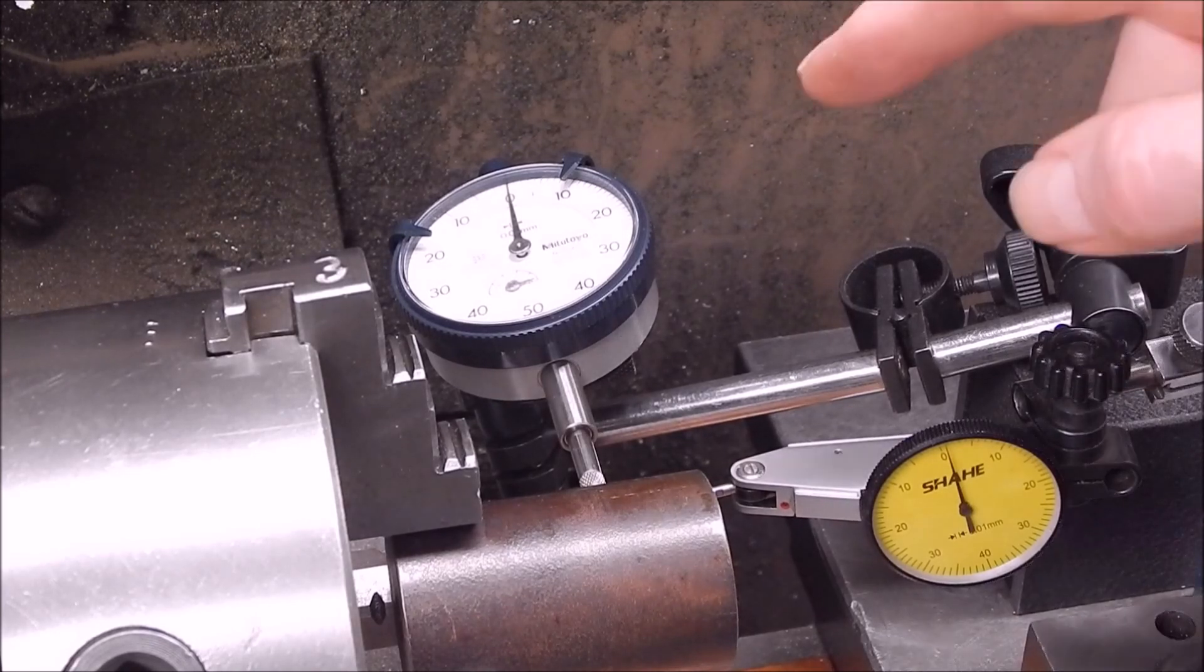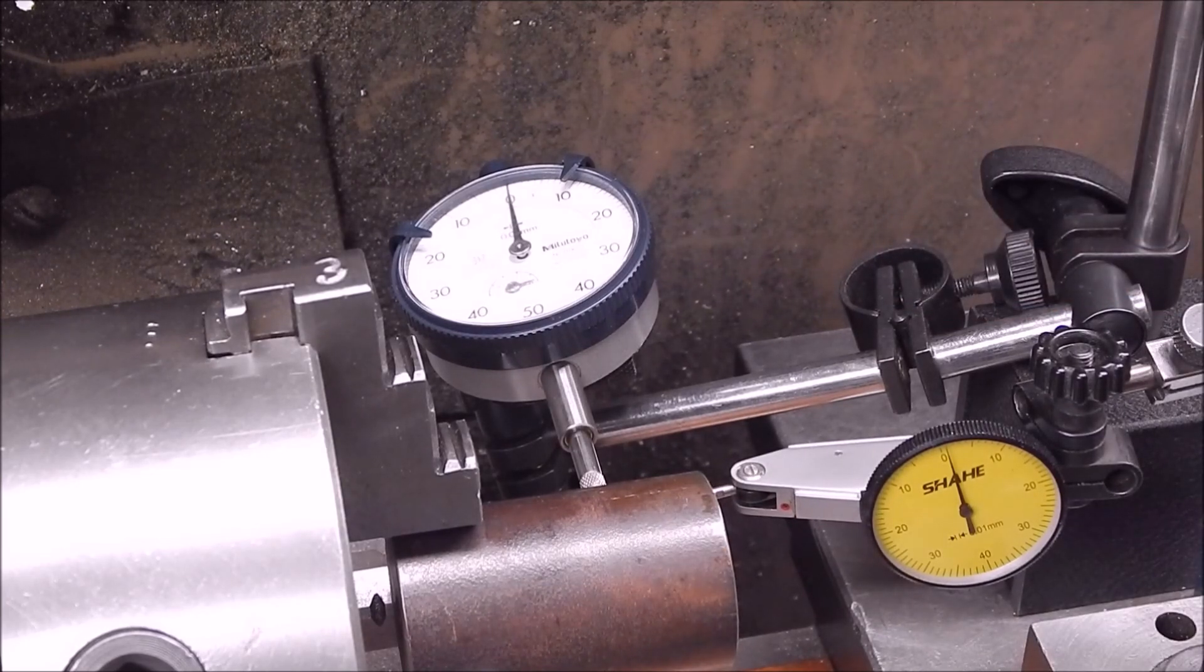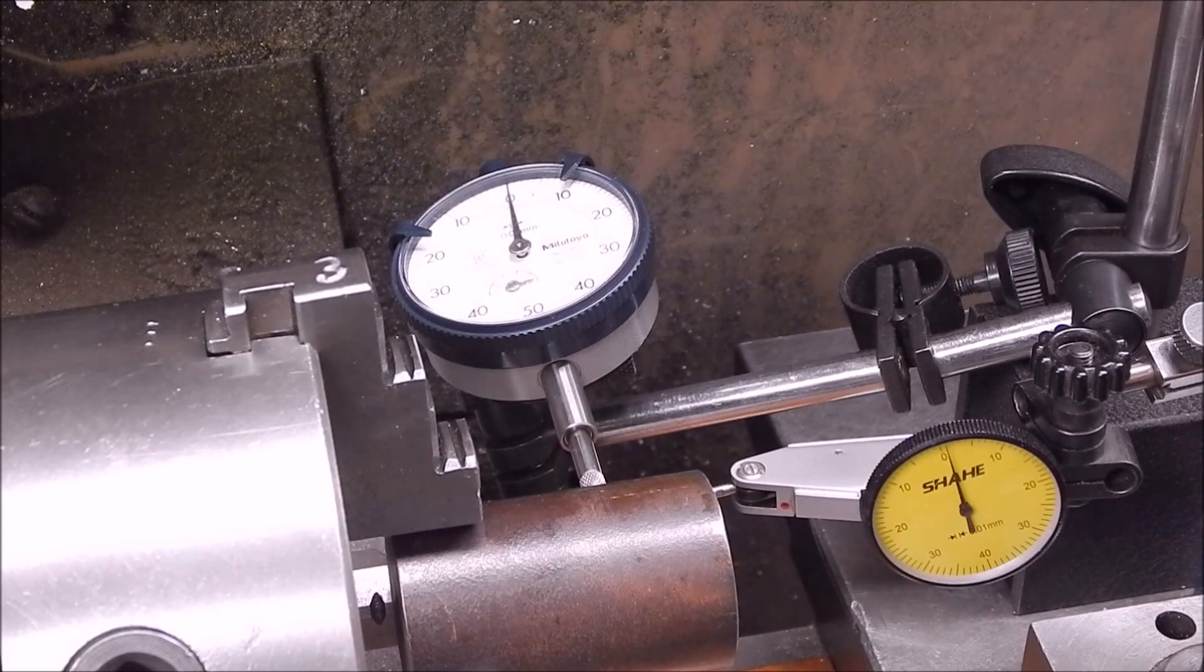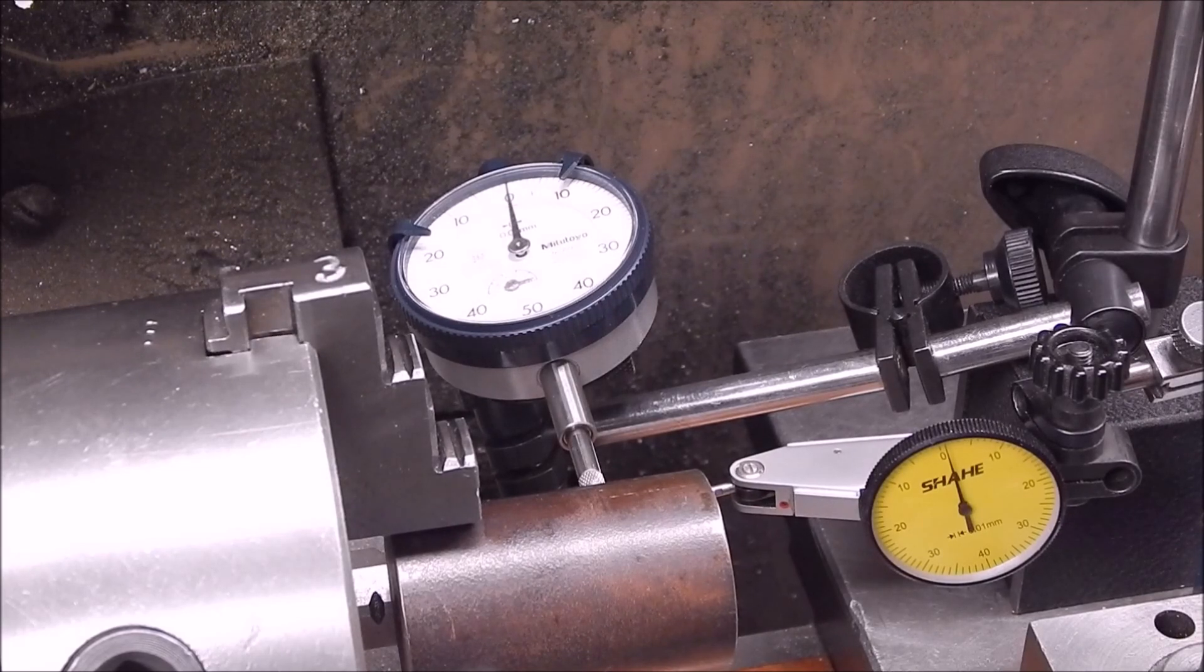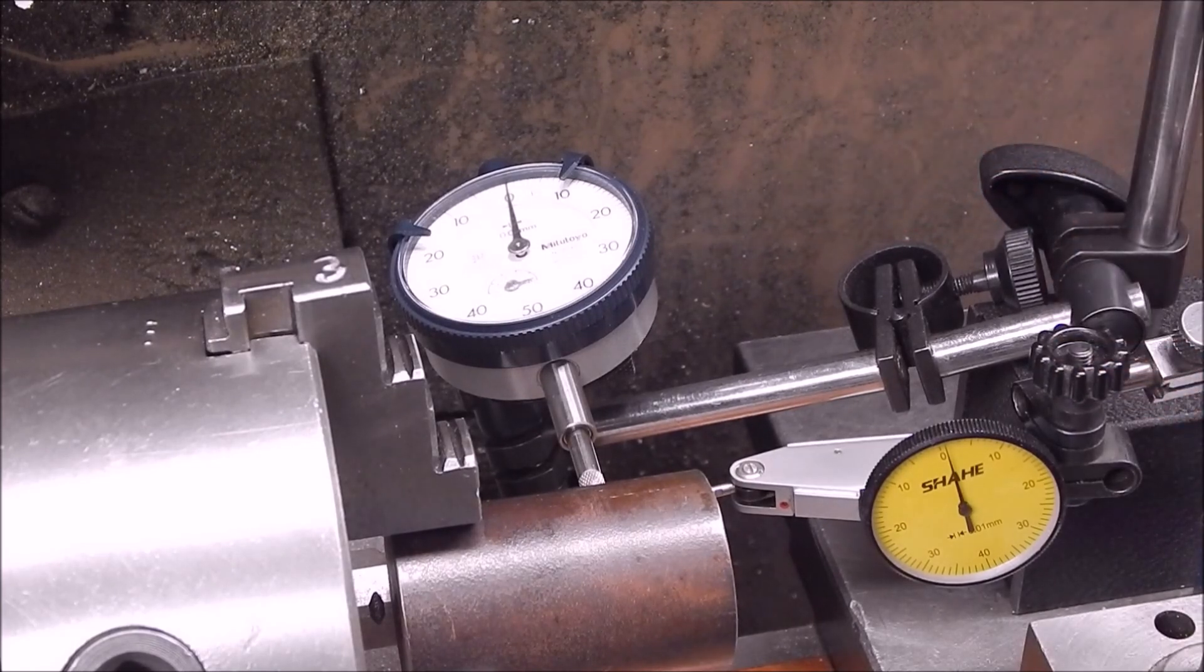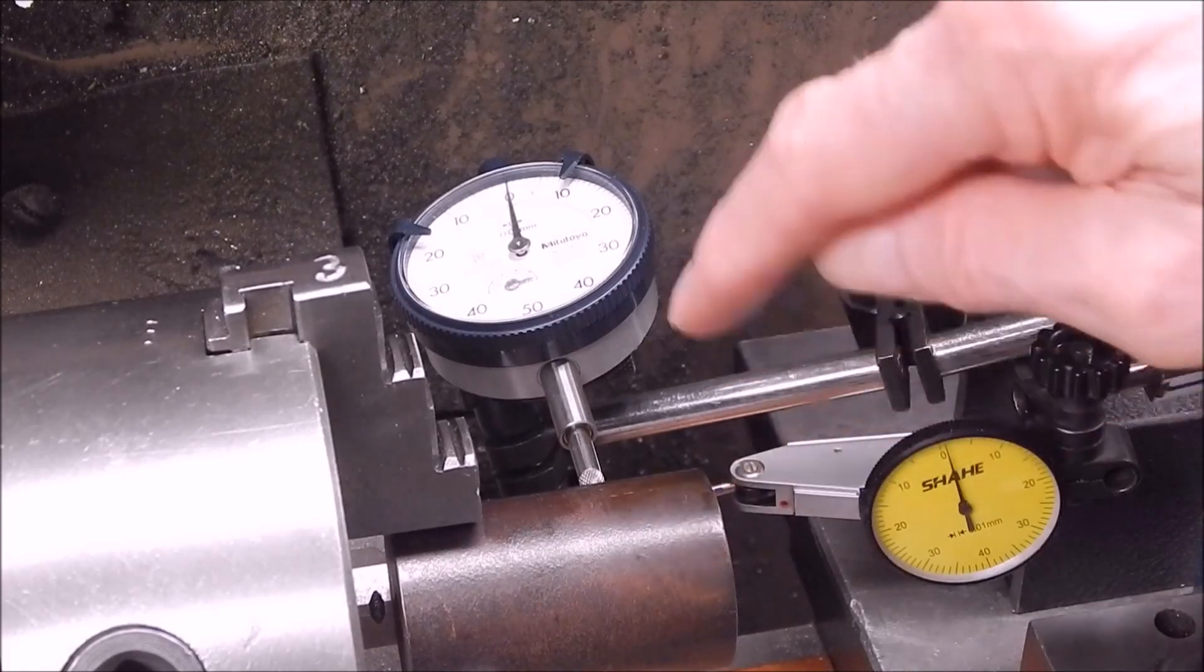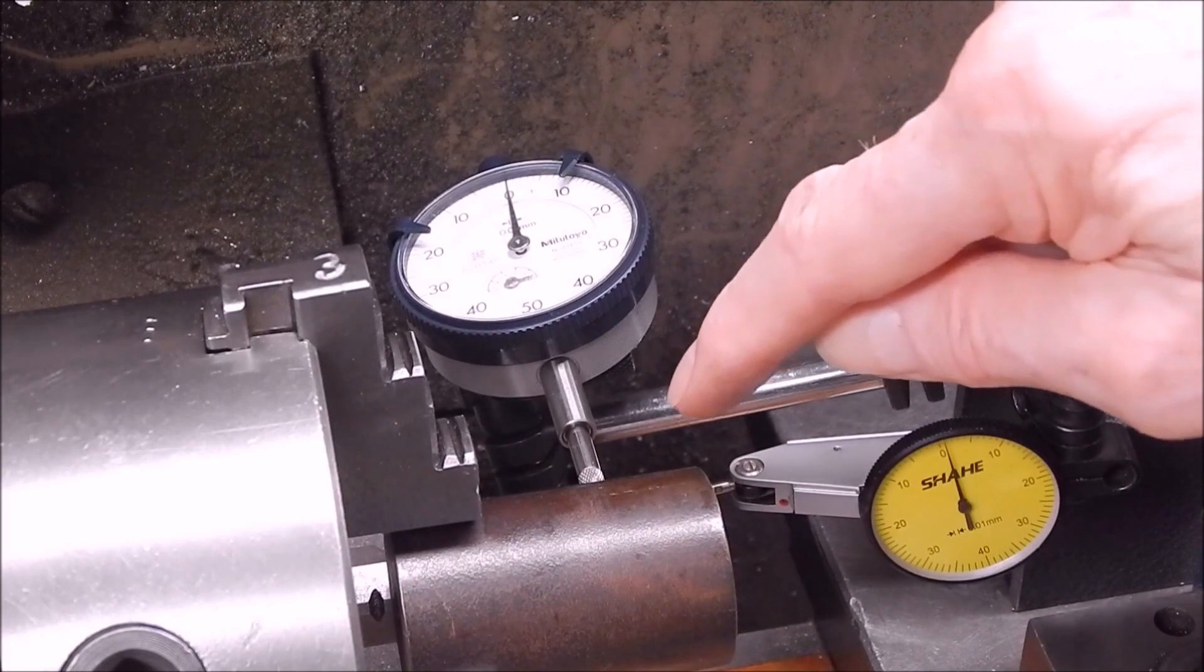Should he be using a dial indicator like the Mitutoyo? Or should he be using a test indicator like a Shae? He was about to buy some measuring equipment. I said well if you want an accurate reading measurement you'll definitely go with the dial indicator because it gives you an absolute figure and if it's set up correctly at 90 degrees to the job there'll be no cosine error.